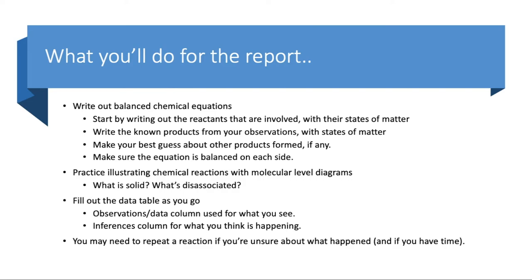Use your observations to figure out what the products are with their states of matter. In some cases there may be another product you have to deduce from the reactants and the known product. Make sure the equation is balanced on both sides to honor the law of conservation of matter. For your molecular-level diagrams, illustrate the complete ionic equation: show solids with ions connected to each other, and dissociated species with ions clearly separate and floating in solution. Fill out the data table as you go — observations for what you see, inferences for what you think is happening.